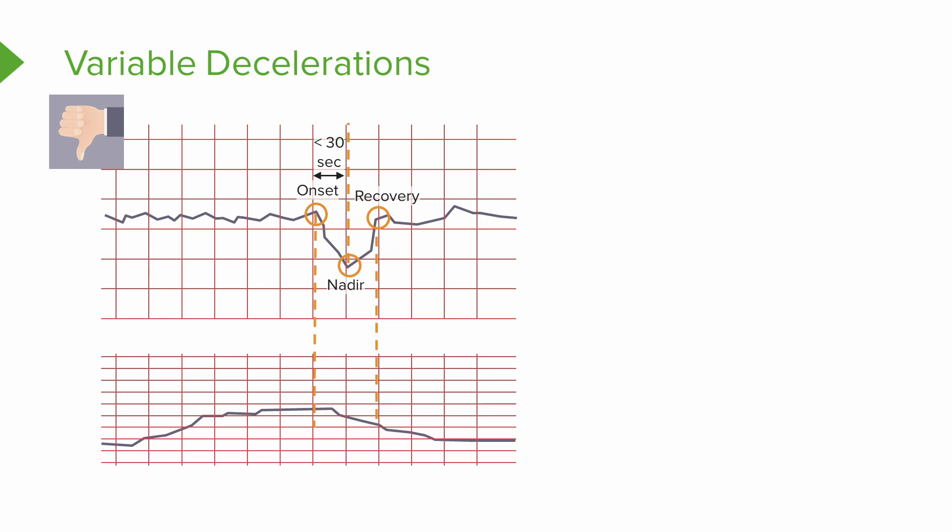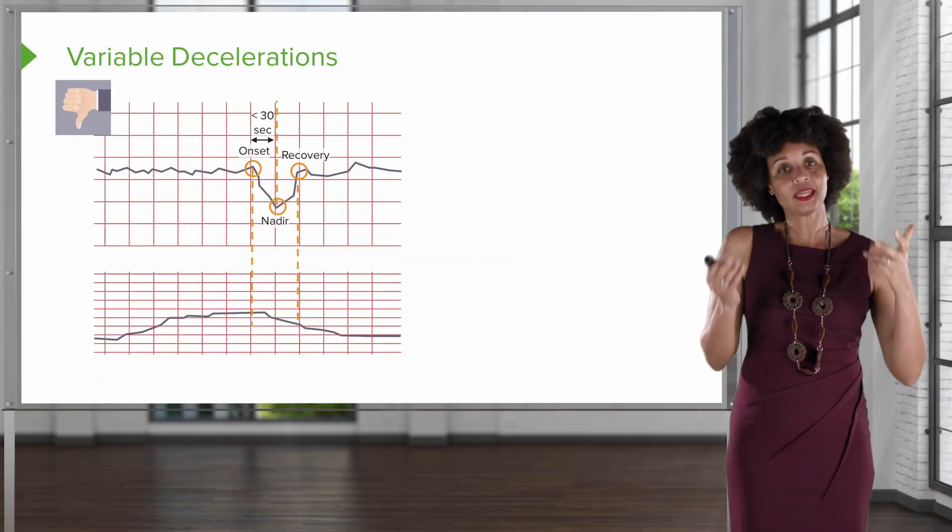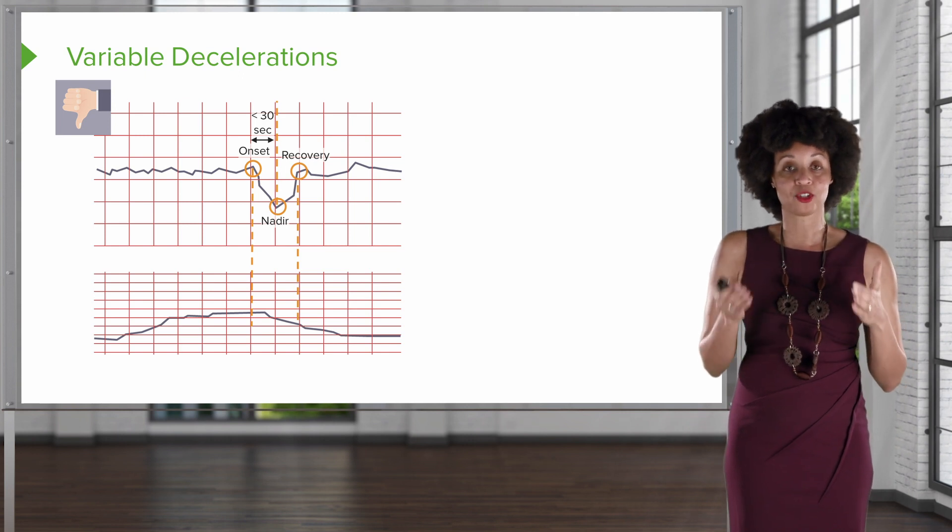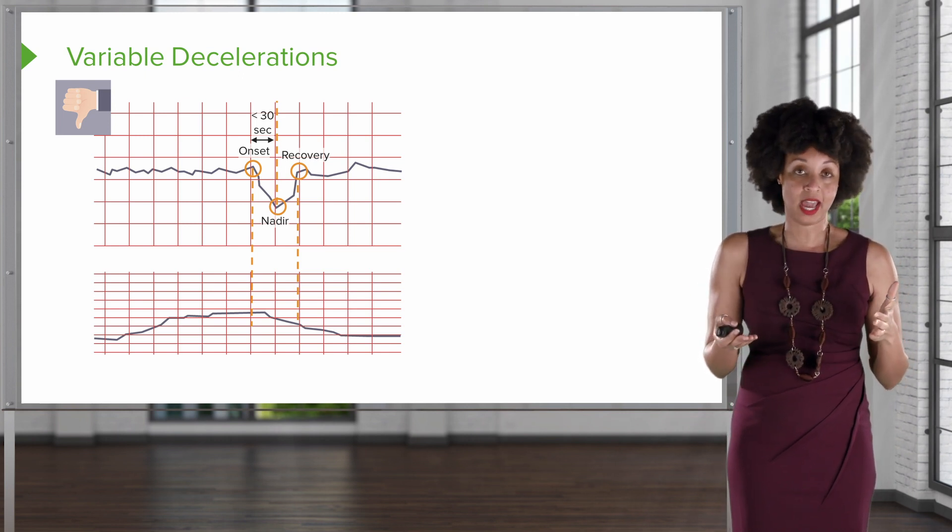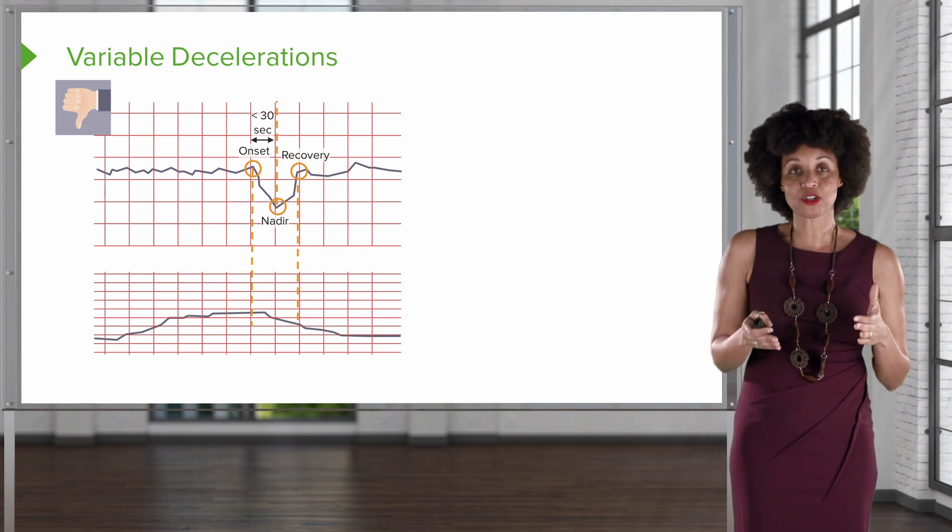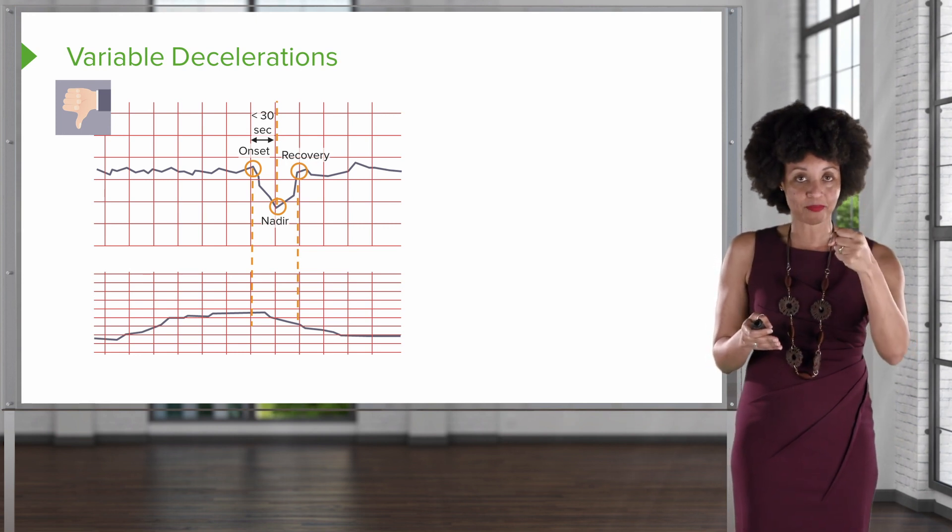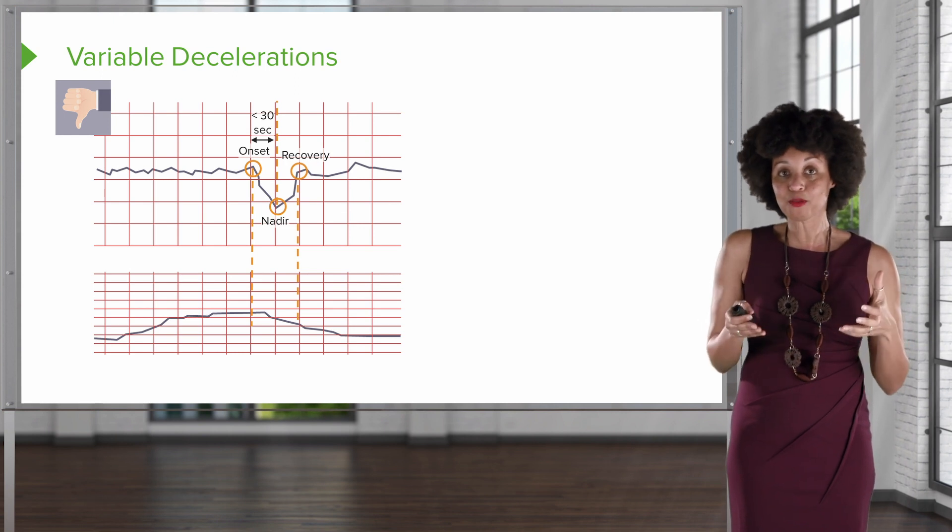It takes less than 30 seconds to go from the onset to the nadir or the lowest point. And it might recover right away. It might take 30 seconds to recover. The other side of it is really unimportant. The only thing that's going to establish that this is a variable is that it takes less than 30 seconds to go from the onset of the deceleration to the nadir. Now in this case we see it happening in relationship to the contraction. But variable decelerations are actually caused by cord compression. And cord compression could happen for any number of reasons.